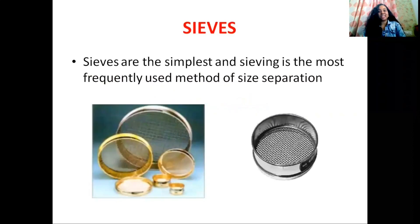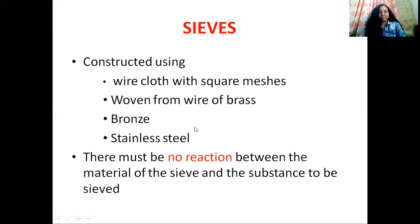Sieves are the simplest and sieving is the most frequently used method of size separation. The sieves are constructed using different types of materials such as wire cloth with square measures, woven from wire of brass, bronze, and stainless steel. One important thing: there must be no reaction between the materials of the sieve and the substances to be sieved.